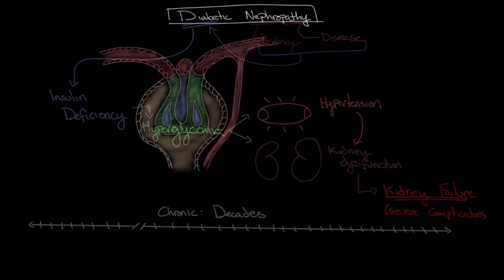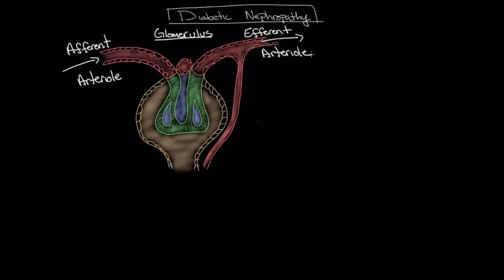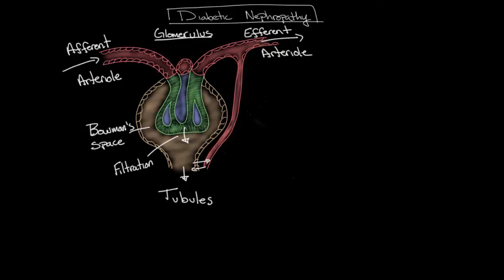Before we dive into the mechanism of diabetic nephropathy, let's briefly review the structure of the glomerulus in the kidney by bringing in a diagram. The glomerulus is the portion of the kidney where blood is initially filtered. Blood enters the glomerulus through the afferent arteriole and then leaves through the efferent arteriole — you can remember this as E for exit or efferent. The filtered fluid that exits the blood is known as filtrate, and it collects in Bowman's space before entering the tubules of the nephron where further reabsorption and secretion occurs before it exits the kidney into the ureters as urine.